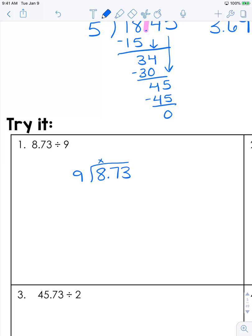9 cannot go into 8. It goes into 87 nine times minus 81. Subtract and bring down. 9 goes into 63 seven times. That's it. We're going to take this decimal and slide it right up. Our answer is 0.97.